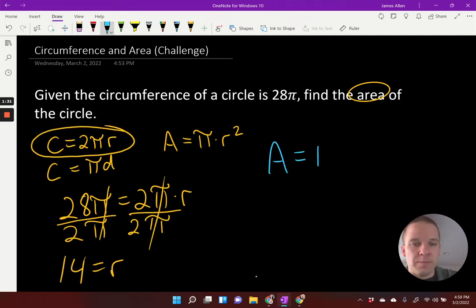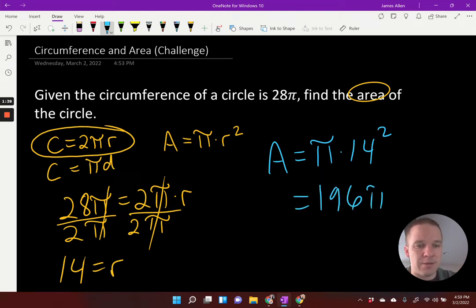My area formula, π times the radius, 14 squared. 14 squared, if you do it in your cabeza, in your head there, we're going to have 196π for my area.